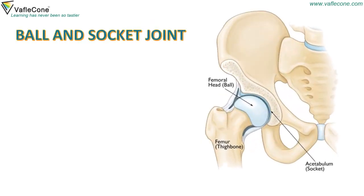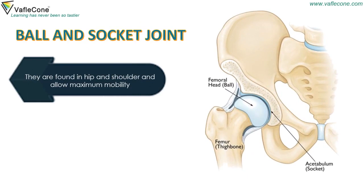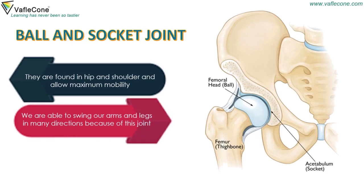Ball and Socket Joint. They are found in the hip and shoulder and allow maximum mobility. We are able to swing our arms and legs in many directions because of this joint.